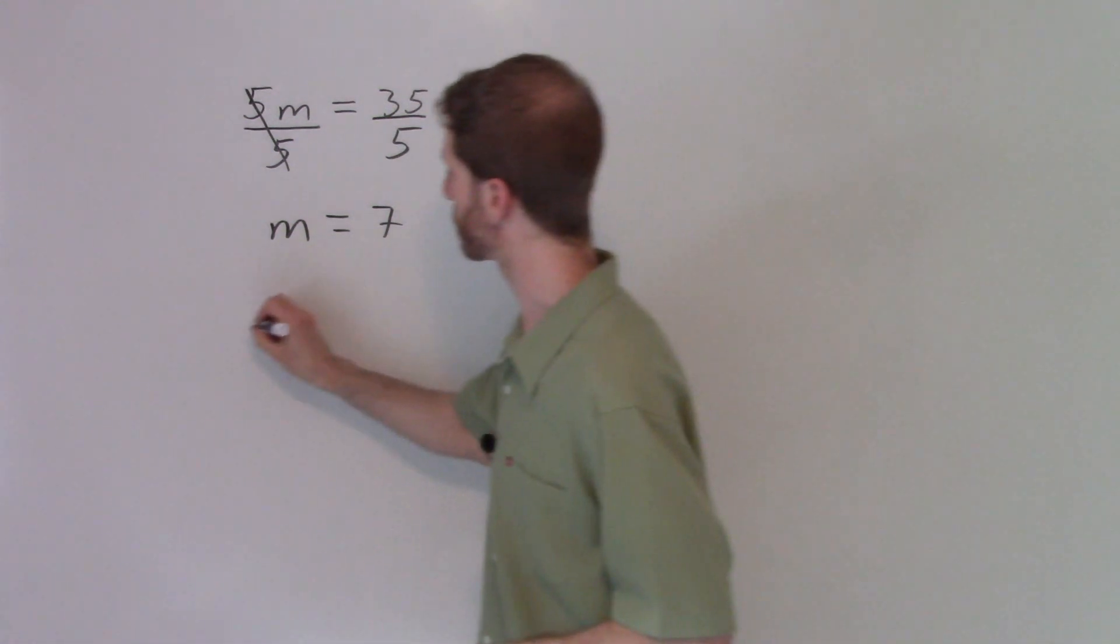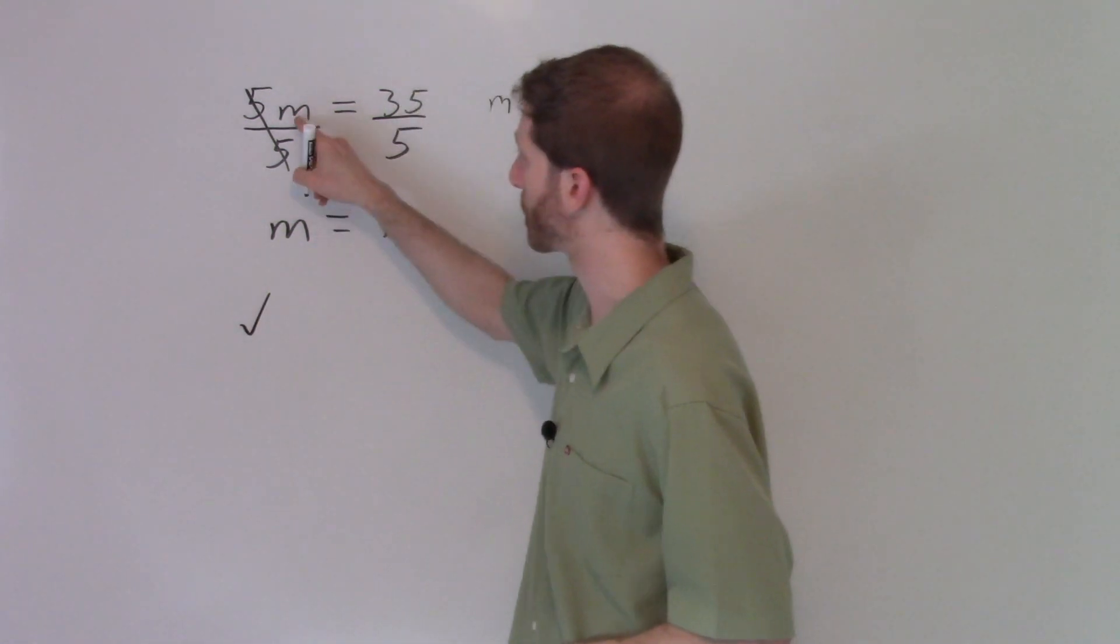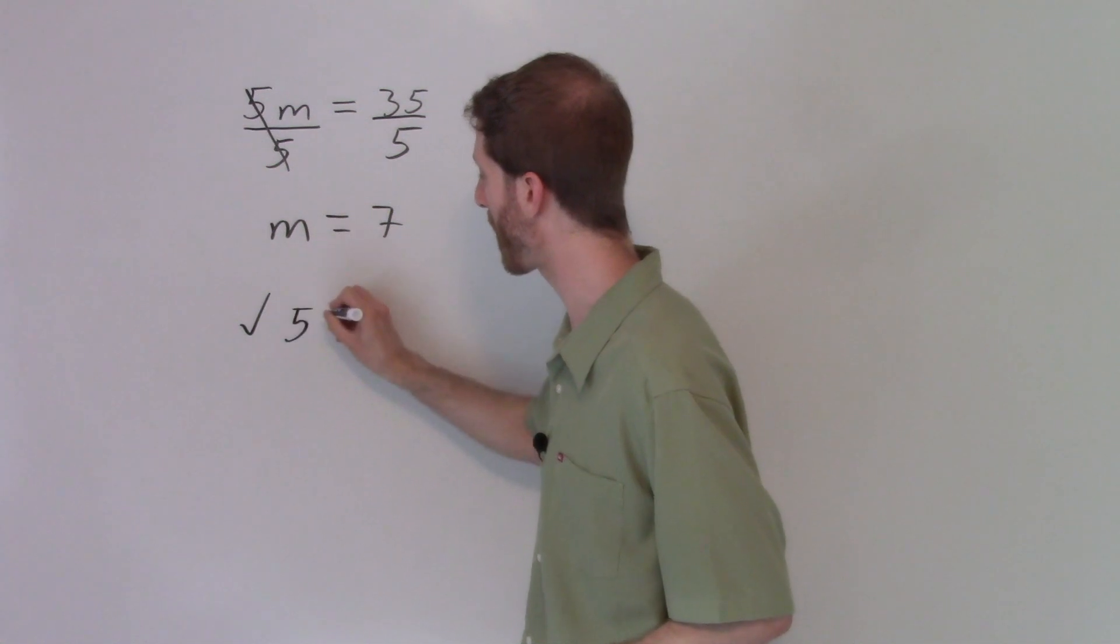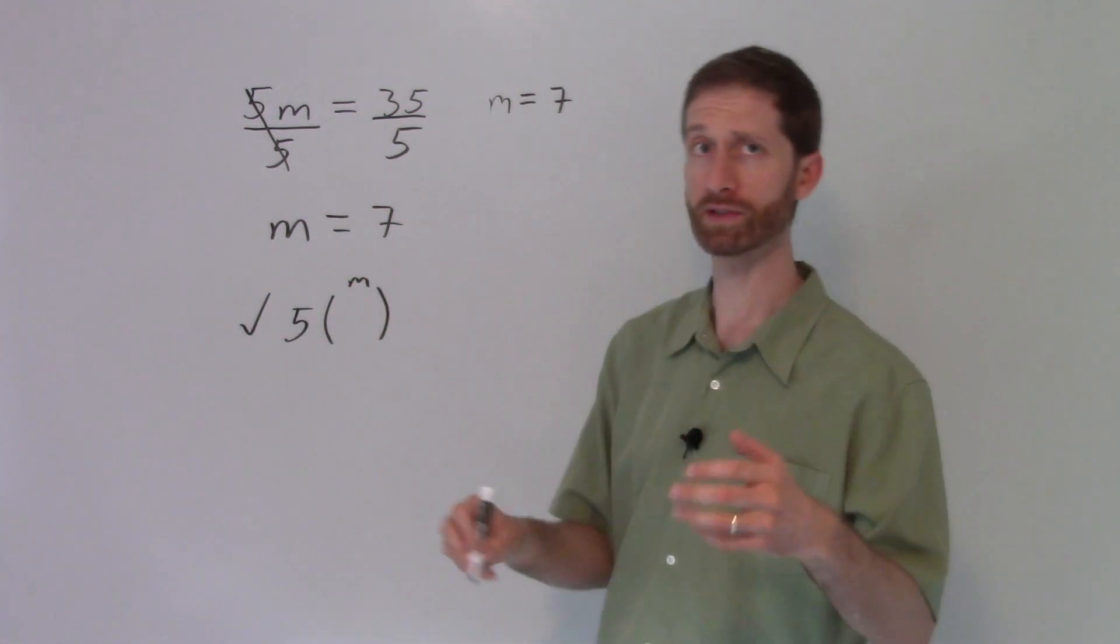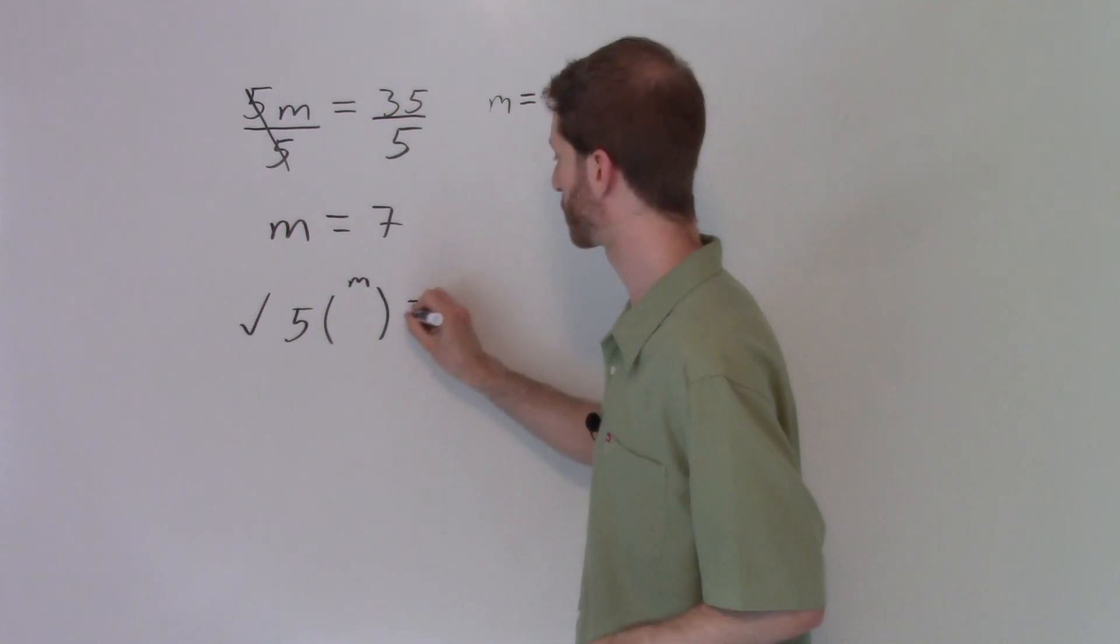Now let's check our answer. To check our answer, we replace m with seven. Remember, m is this blank spot. You can represent it with parentheses or a tank, some kind of opening.